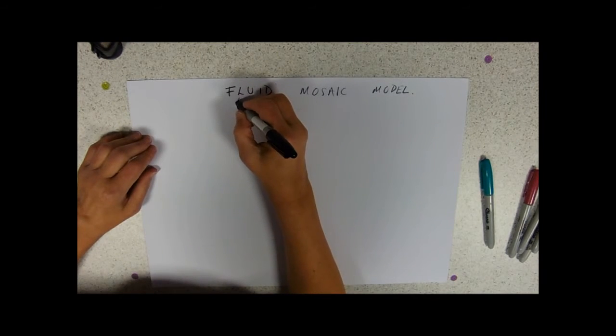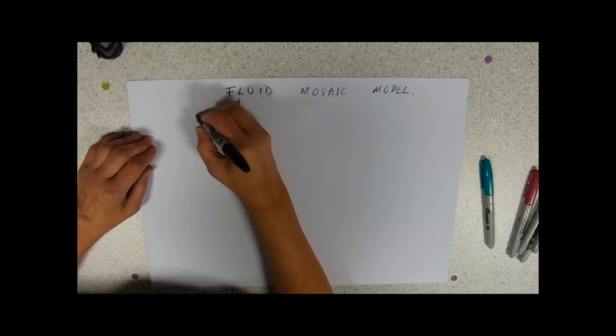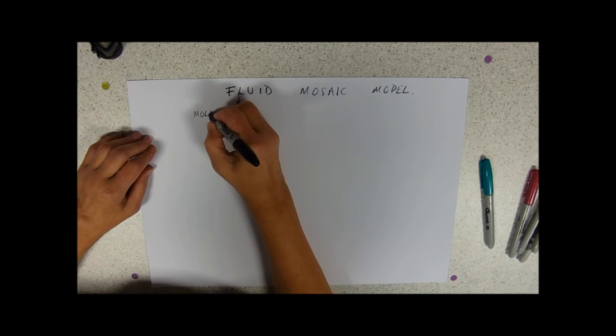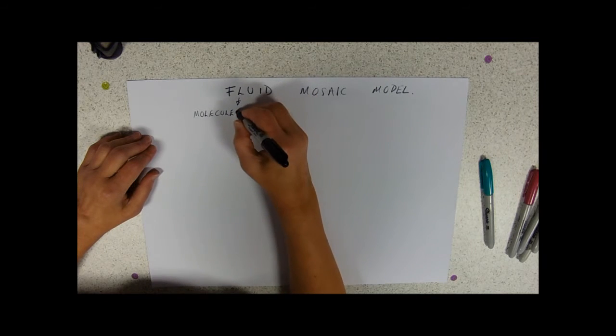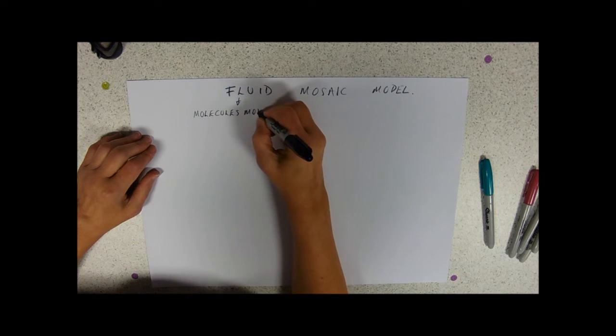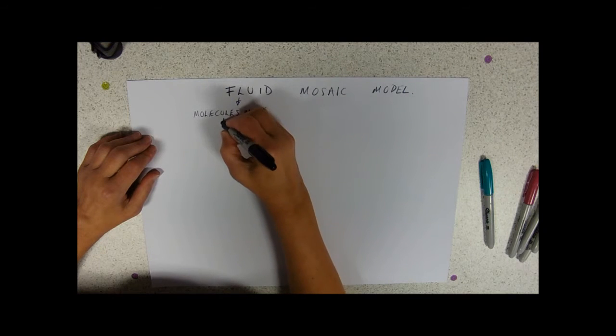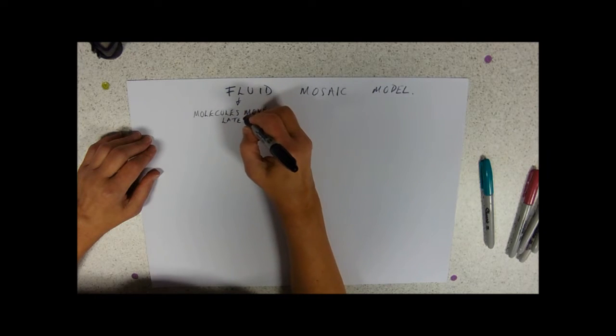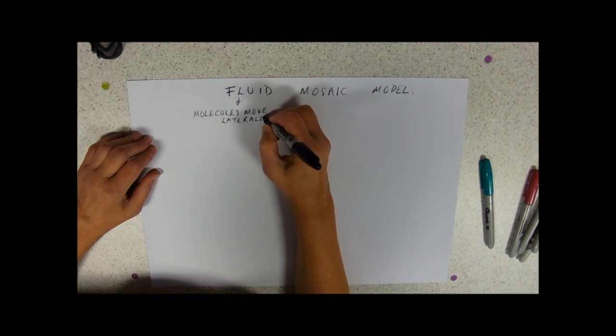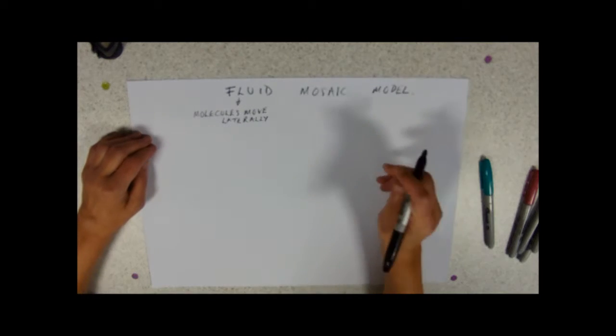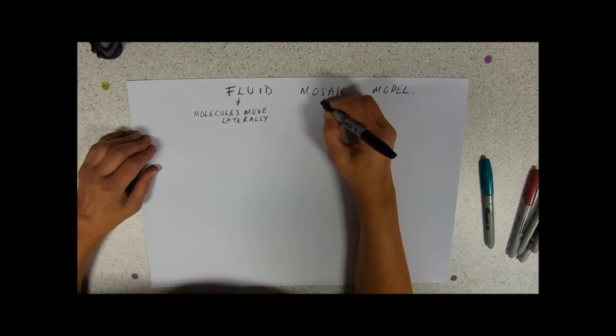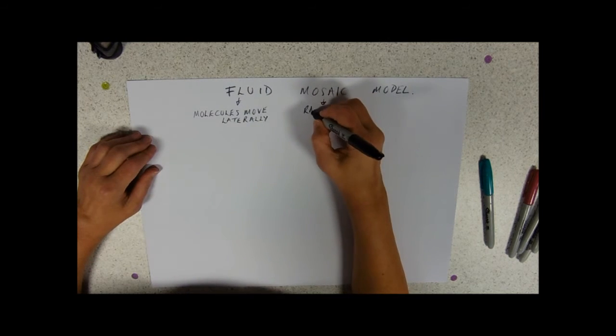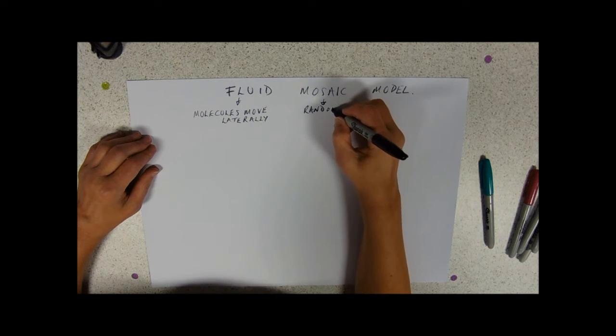So what the fluid bit refers to is that the molecules can move laterally, that means sideways in the membrane. So molecules moving laterally. So it acts pretty much like an oil. And mosaic refers to the random pattern of proteins.